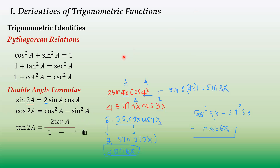The last double angle formula is tangent of 2a, which equals 2 tangent a all over 1 minus tangent squared a. So if you have that pattern, you can express it as a single tangent function with a doubled angle — from a to 2a.